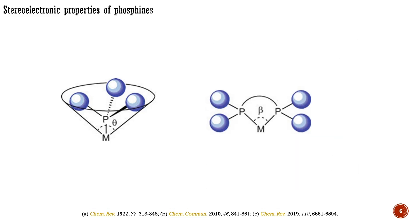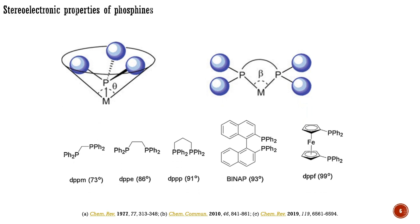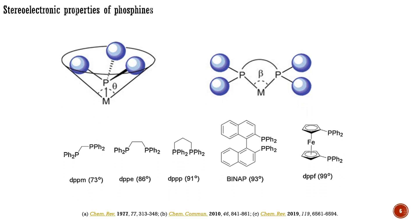For chelating ligands, the steric hindrance caused by the ligand is quantified by measuring the bite angle. The bite angle is the ligand-metal-ligand bond angle of a coordination complex containing a bidentate ligand. The magnitude of the bite angle depends on the size and flexibility of the bridging linker between the two phosphine atoms. Here are some common chelating ligands with corresponding bite angles. The larger the bite angle, the more sterically hindered the system will be. For instance, DPPF has the largest bite angle among these ligands and is one of the most successful ligands in cross-coupling chemistry.